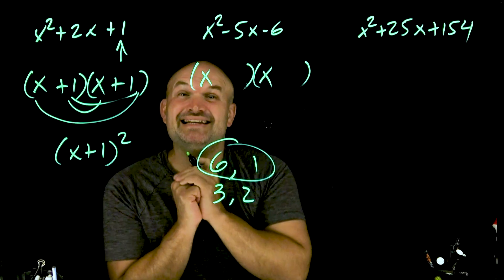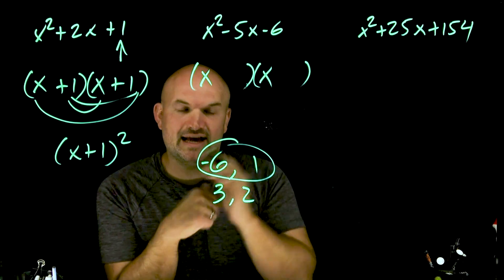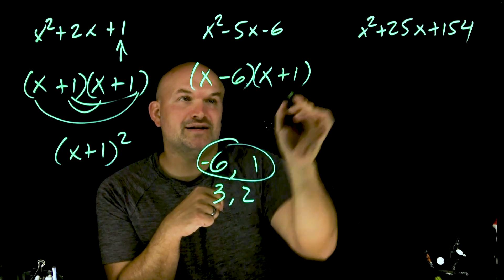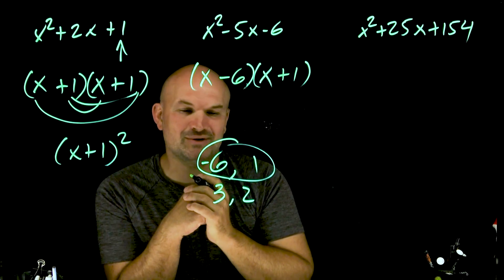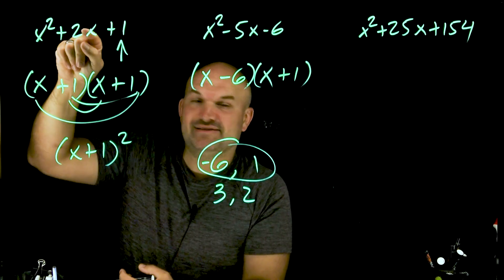Now we need to get a difference of negative 5. So what we need to do is make sure that's going to be a negative 6 and that's going to be a positive 1. And ladies and gentlemen, those are going to be your two factors. So it's (x - 6)(x + 1).